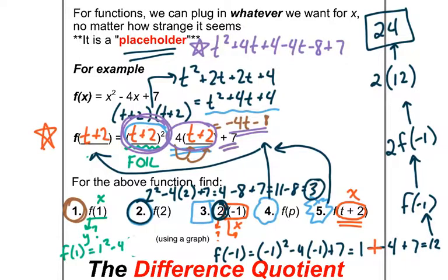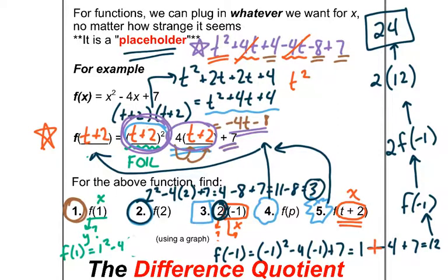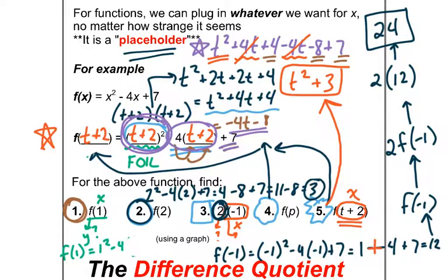Now let's gather all like terms. I see a t squared. I see a plus 4t and a minus 4t — they're opposites, they cancel each other out. For the remaining constant terms: plus 4, minus 8, and plus 7 equals 3. So the answer to number 5, after all that work, is t squared plus 3. Notice the algebra on that — this type of problem is going to lead into something tougher in just a second.